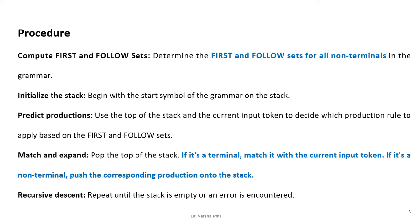The procedure is: first, compute the first and follow sets for all non-terminals in the grammar. Then initialize the stack by pushing the start symbol, because it is a top-down parser. Next, predict the production to use based on the top of the stack and the current input token, using the first and follow sets. Then match and expand: pop the top of the stack — if it is a terminal, match it with the current input token; if it is a non-terminal, push the corresponding production onto the stack.